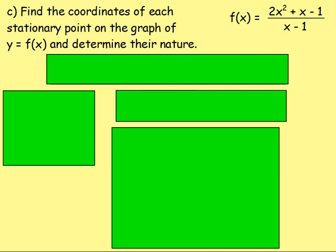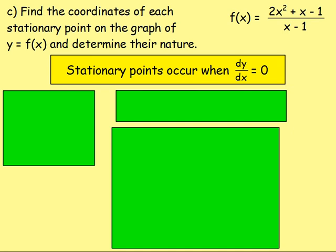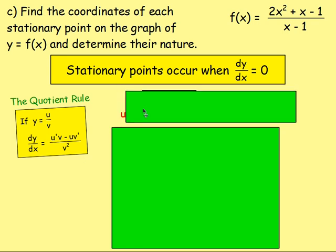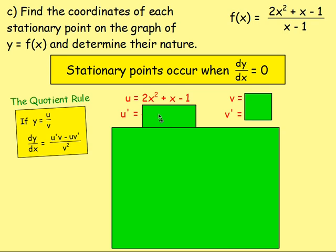Part c — find the coordinates of each stationary point on y = f(x) and determine their nature. Stationary points occur when dy/dx equals zero. To differentiate (2x² + x − 1)/(x − 1) we must use the quotient rule: (u'v − uv') / v², where u = 2x² + x − 1, v = x − 1. Differentiating: u' = 4x + 1 and v' = 1.